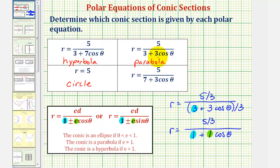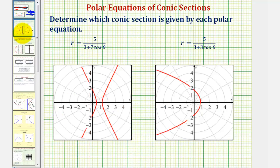Let's look at the graphs of these first two equations. Here's the graph of the hyperbola, because the eccentricity was greater than one. And here's the graph of the parabola, because the eccentricity was equal to one.